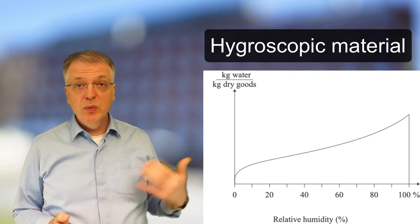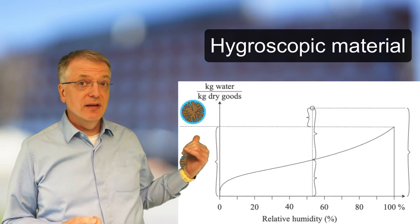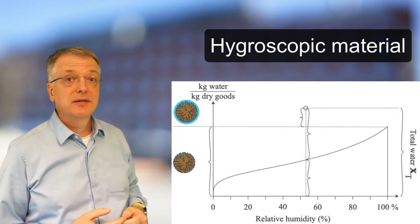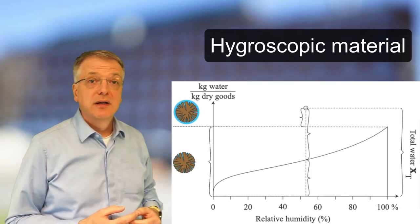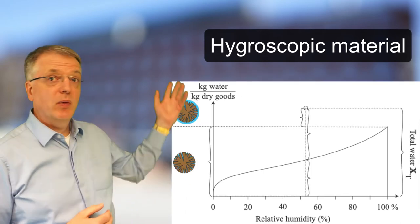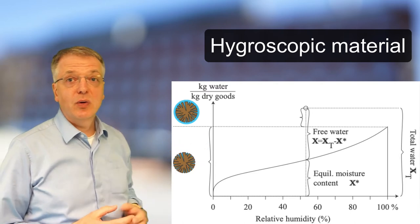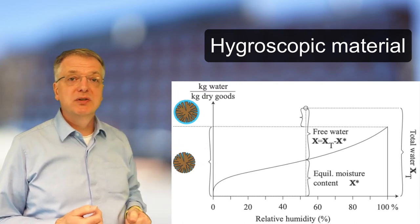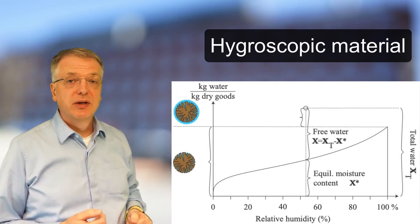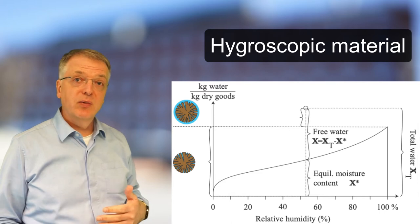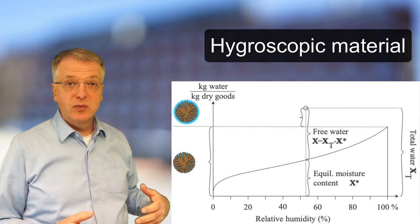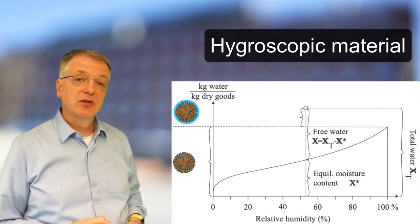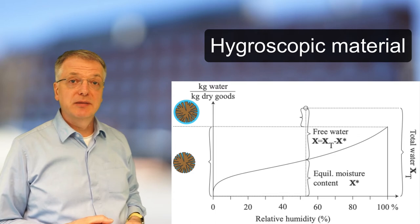There are two ways to divide the total water of a hygroscopic material. The free water is the total water content minus the equilibrium moisture content. Thus, the free water is the water that can be dried away using air of a certain relative humidity.